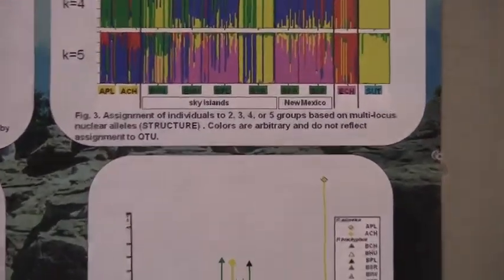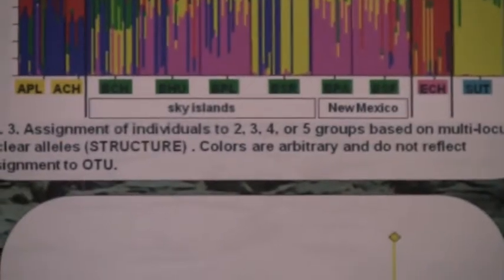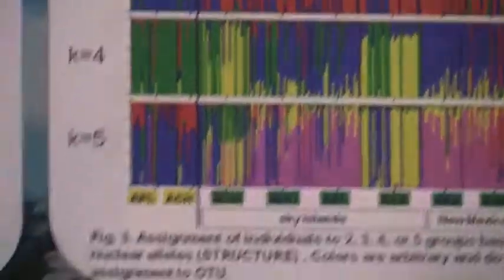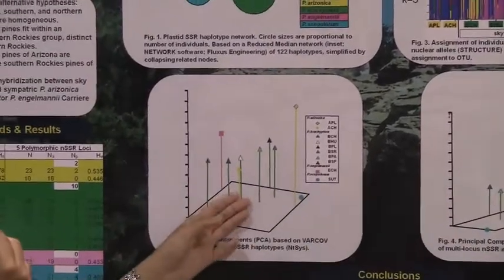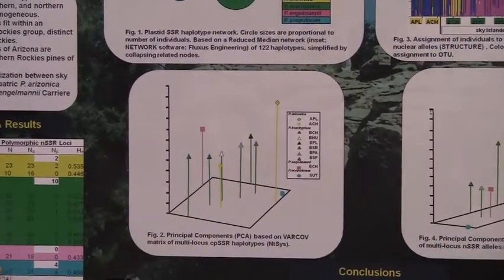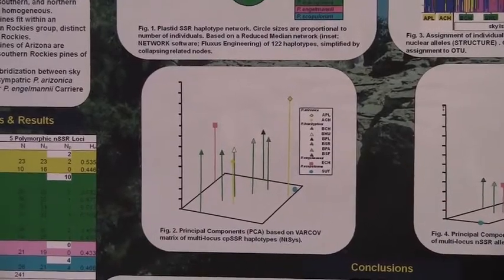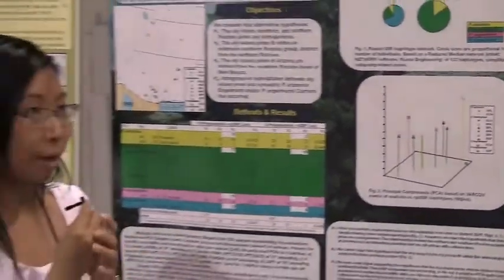Also, we see that one population of Pinus arizonica in figure 2 as well as in figure 4 grouped together with the Brachyptera. So, we think that introgression may be the explanation for these patterns.